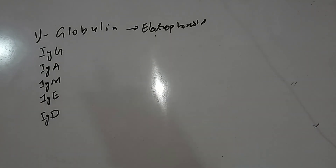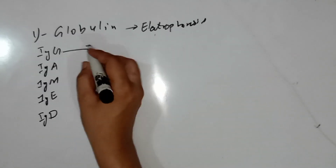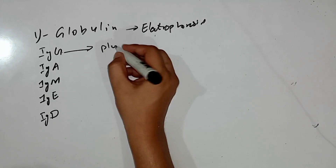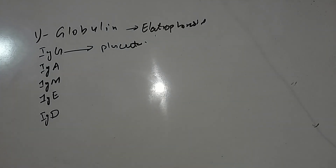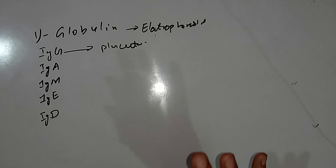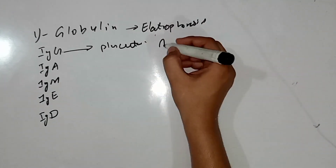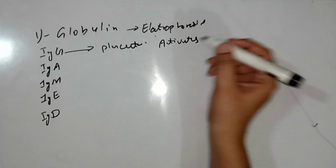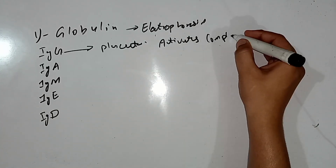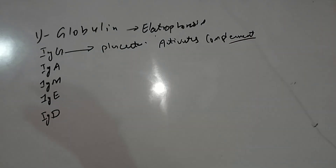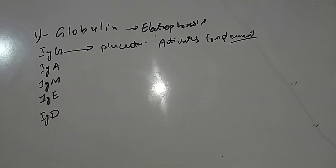The first class is IgG, which is present in the blood. It is the only immunoglobulin that easily crosses the placenta, transferring maternal immunity to the developing fetus. IgG also activates the complement system — a set of proteins in the blood that work to destroy foreign particles.